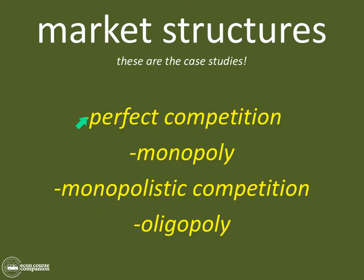Every firm is going to figure out what their cost, revenue, and profit are, but the way they behave is going to be dictated by the structure in which they operate. If they're in a perfect competition market they'll behave a certain way, a monopoly another way, monopolistic competition another way, oligopoly another way — just like you behave differently at school than at home than with your grandparents or your friends.